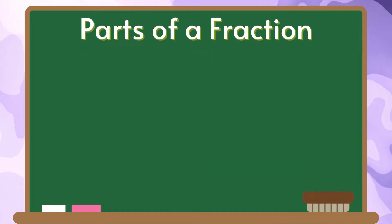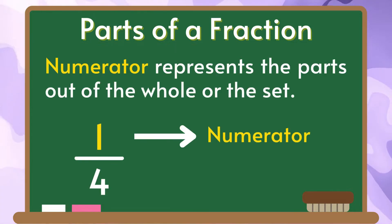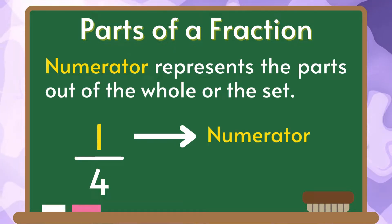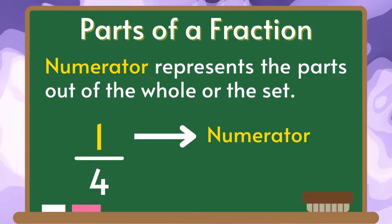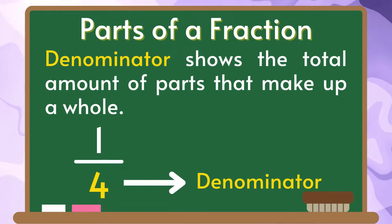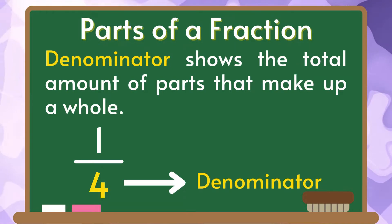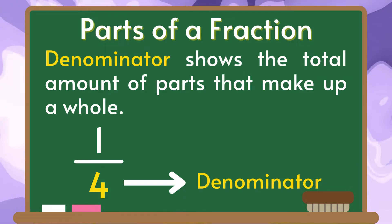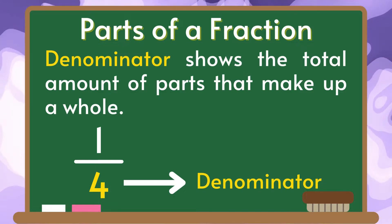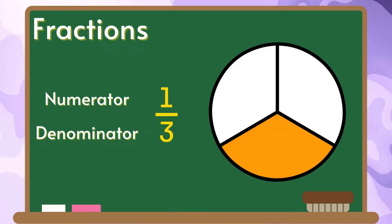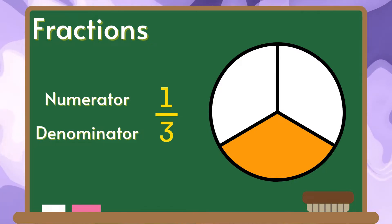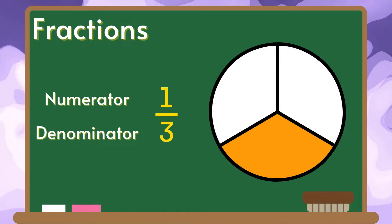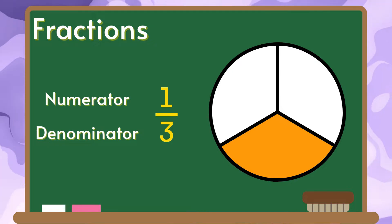Now, let us study the parts of a fraction. The numerator represents the parts out of the whole or the set, while the denominator shows the total amount of parts that make up a whole. In this figure, the numerator represents the shaded part, while the denominator represents the number of parts that make up a whole.